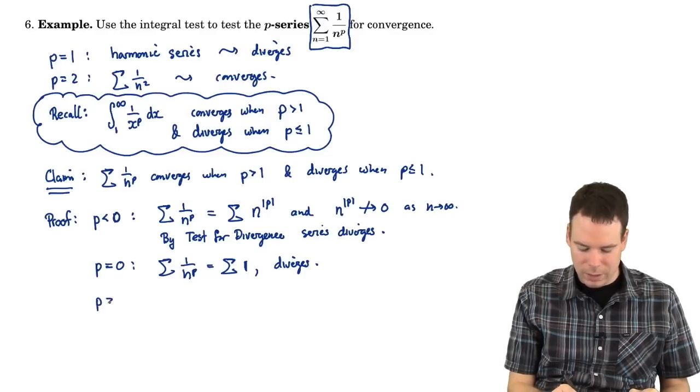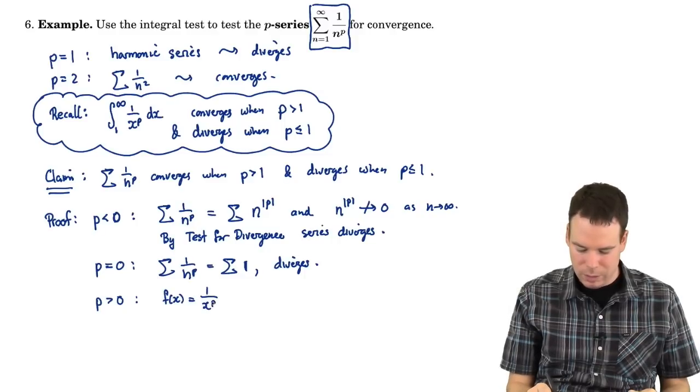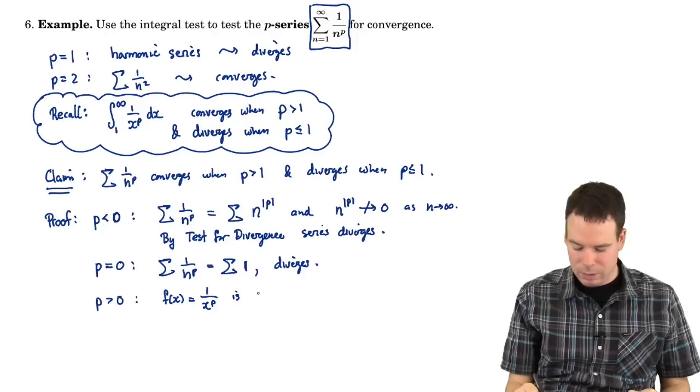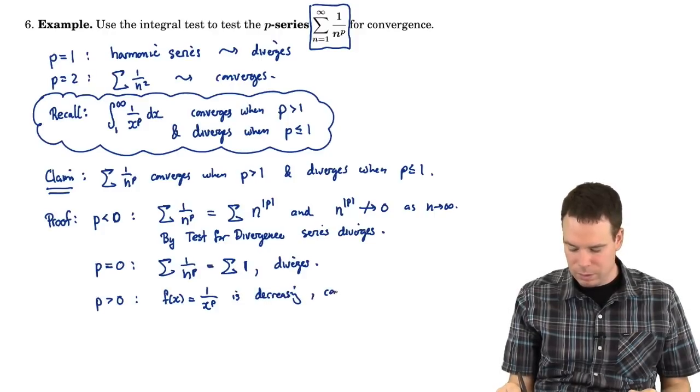Now what about the case when p is bigger than 0? Well in this case, the corresponding function is 1 over x to the p is decreasing now. This is a decreasing function. Decreasing, continuous, and positive.